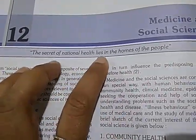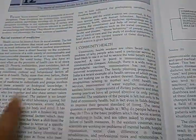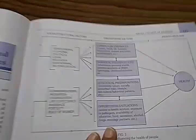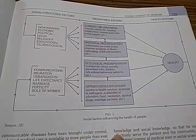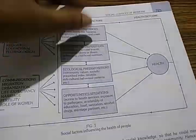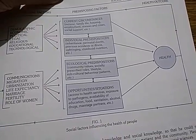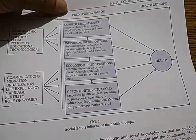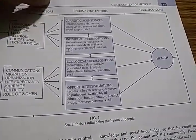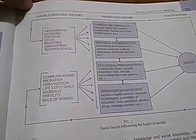Chapter on medicine and social science — the secret of national health lies in the homes of the people. Social factors influencing health: current circumstances, individual predispositions, ecological predispositions, opportunities, situations — these terminologies are specific and you have to write them exactly in the exam. People can speak generally but the examiners want very specific terms.